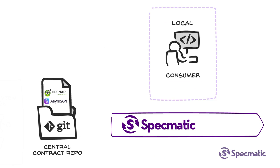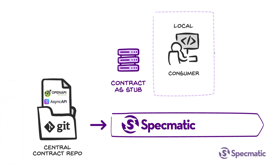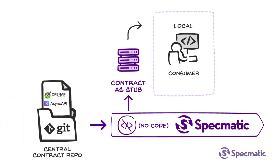When the consumers start their development, they would use Specmatic to mock or stub out the provider using the spec in the central contract repo. Specmatic provides no-code service virtualization by leveraging API specifications. This will allow the consumer to develop and test their code locally without waiting for the provider service.